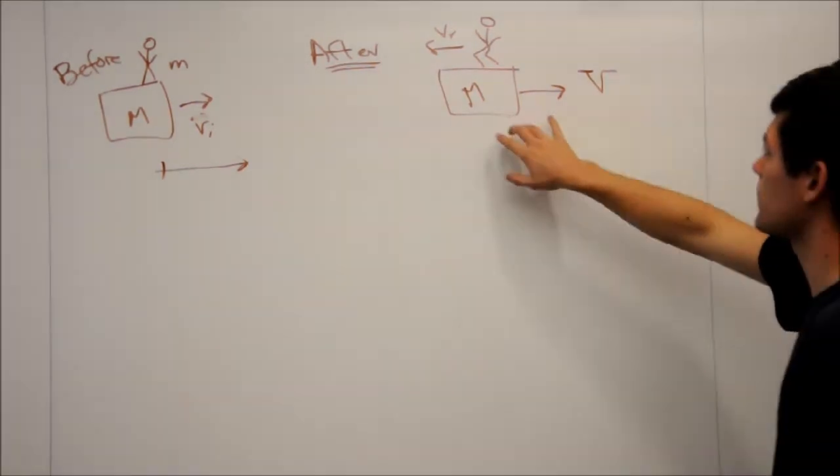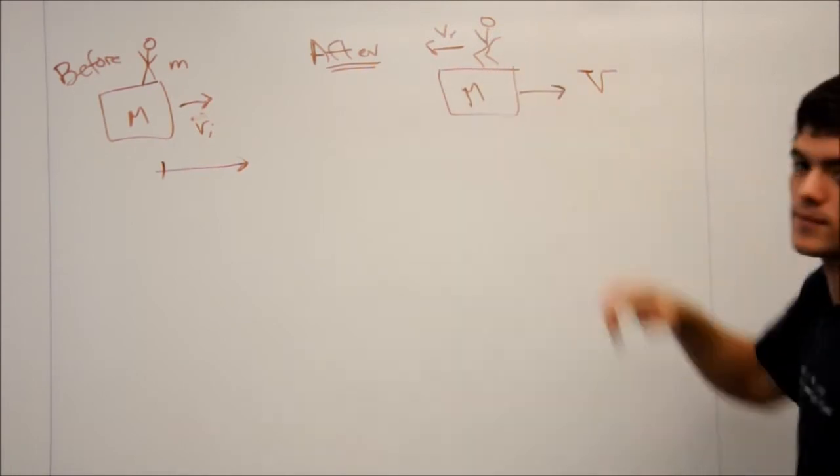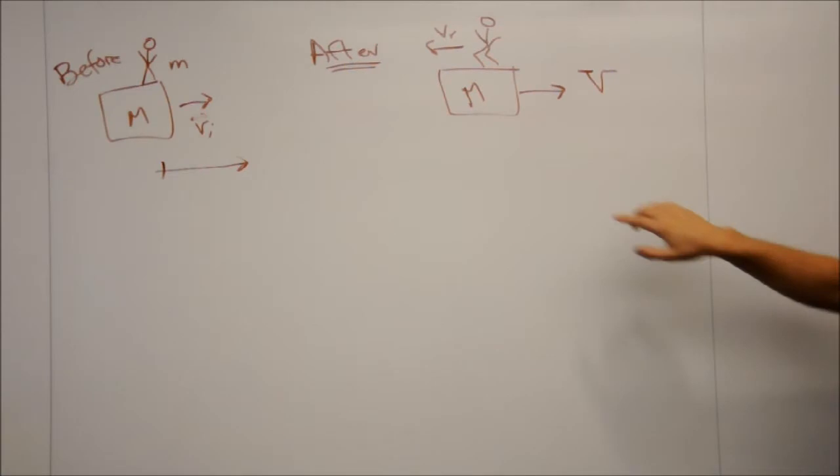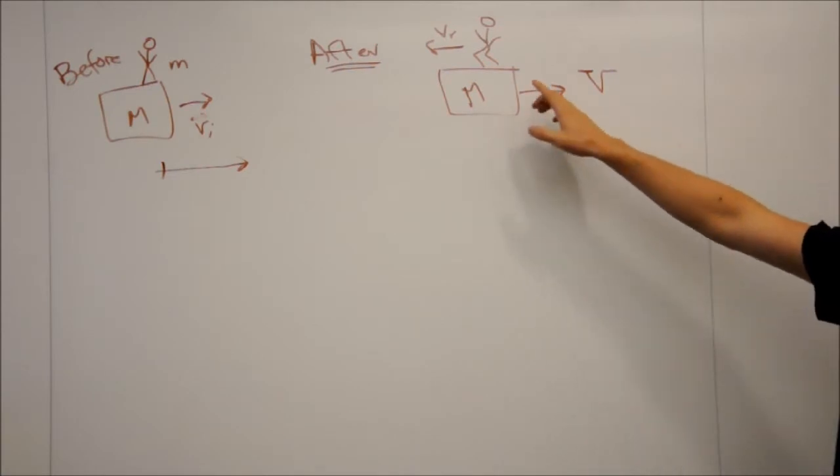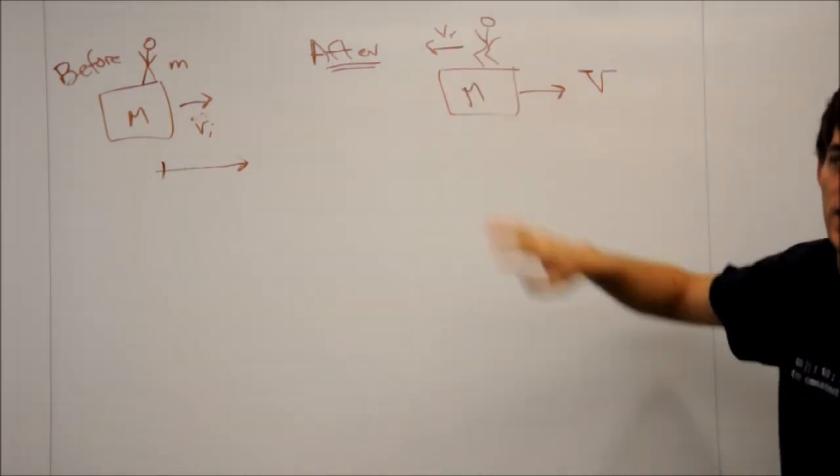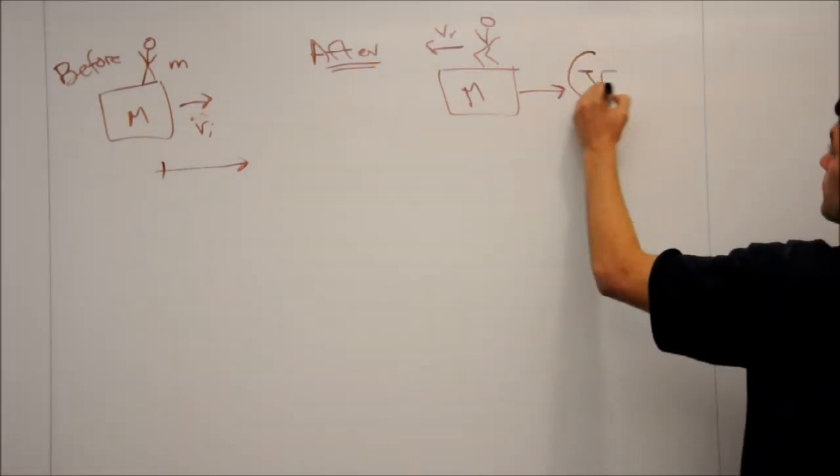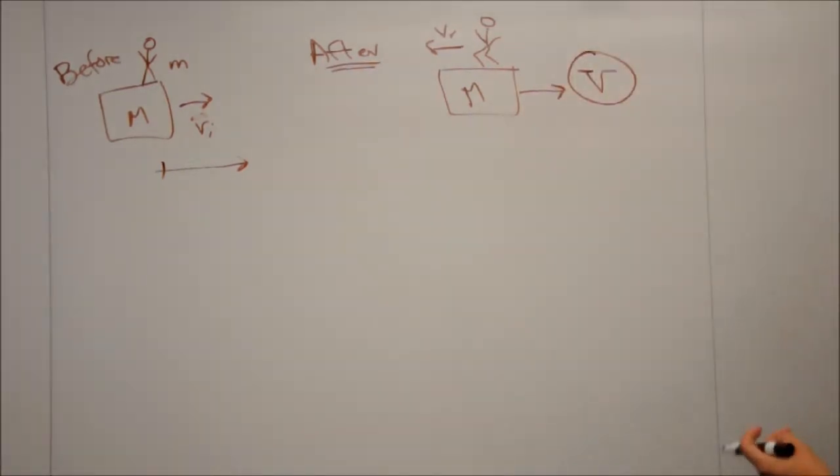What's important to note about this is that VR is not the man's absolute velocity. It's simply his speed in the moving reference frame of the cart itself. So we don't actually know yet what his absolute velocity is. And this big V right here is the value that we're trying to solve for.